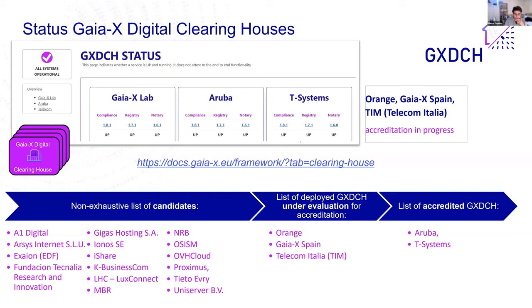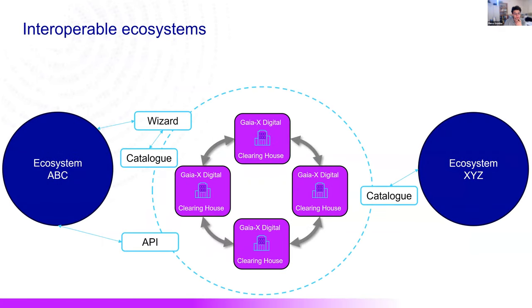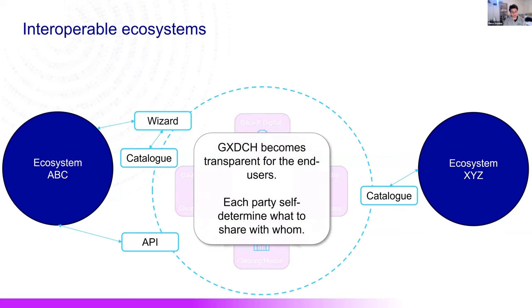Back to the clearinghouse — I would like to give one example. We have this network of clearinghouses and these ecosystems. The ecosystems themselves use the clearinghouse — maybe through a wizard, a UI, a catalog, an API — there are different types of tools they develop themselves. The blocks in light blue are not things that we develop ourselves; those are microservices and APIs being developed based on our API and standards to interact with the data clearinghouse and create this interoperability across ecosystems. At the end, the complexity of the clearinghouse in the middle fades away — a user in ecosystem ABC will not necessarily realize they are using a clearinghouse from provider Z when they want to exchange data or contractualize with the ecosystem from the other side.